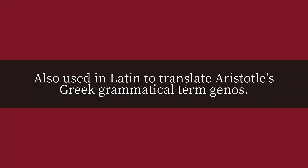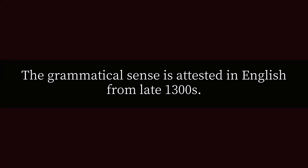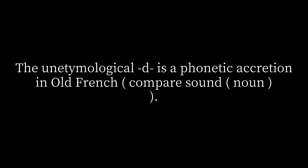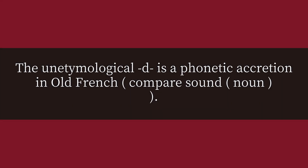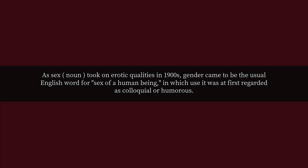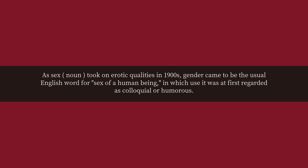Also used in Latin to translate Aristotle's Greek grammatical term 'genus.' The grammatical sense is attested in English from the late 1300s. The unetymological 'd' is a phonetic accretion in Old French. The male or female sex sense is attested in English from the early 1400s. As 'sex' took on erotic qualities in the 1900s, 'gender' came to be the usual English word for the sex of a human being, at first regarded as colloquial or humorous.